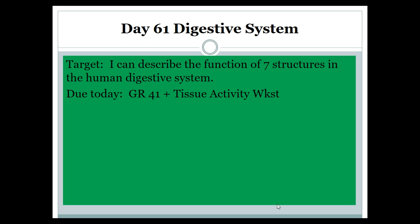Welcome to Day 61 ETD and notes for AVBio. This is focused mainly on the digestive system, hoping to go after describing the function of the seven structures in the human digestive system. That will mostly go after what's in GR41, but what we left off last time was with GR40, so you should dig out GR40 as well, because we need to finish off the most important parts of that.